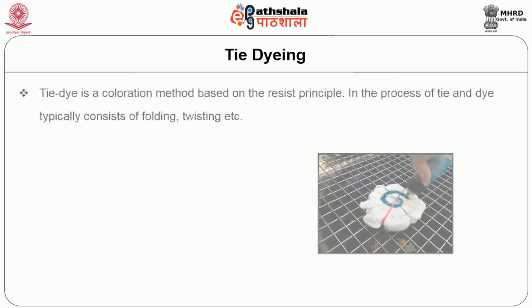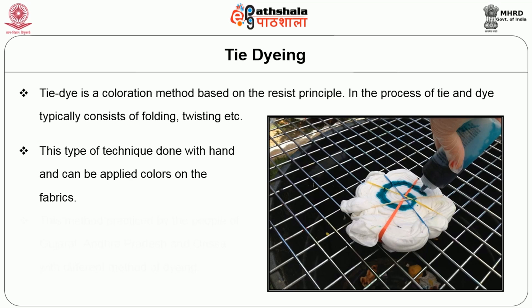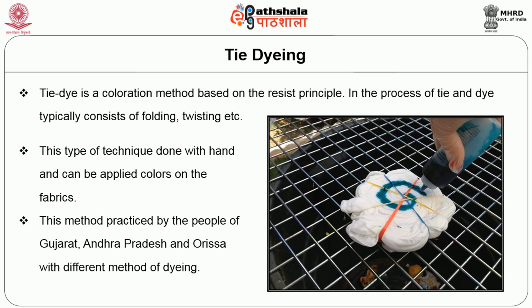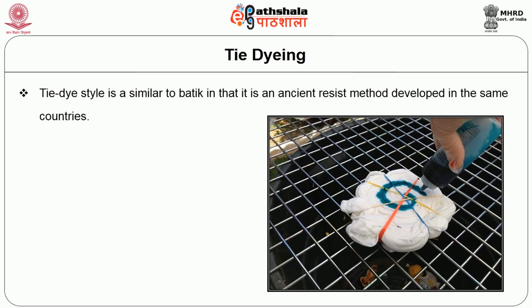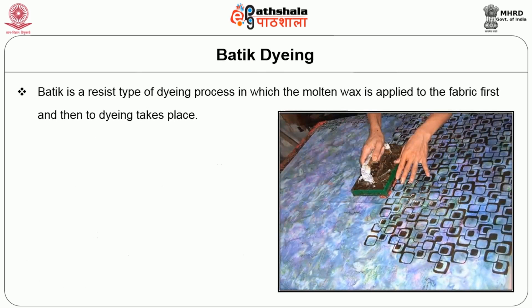Tie and dye is a coloration method based on the resist type. The process typically involves folding, twisting, and gathering the fabric together, done by hand, with colors applied on the fabrics. This method is practiced by the people of Gujarat, Andhra Pradesh, and Orissa with different methods of tying. Tie and dye style is similar to batik as an ancient resist method. It is particularly associated with Japan where it is considered a historic art. The fabric is folded, knotted, and tied with wax string or rubber band, dipped into a dye bath, and after drying the tied thread or rubber band is removed.